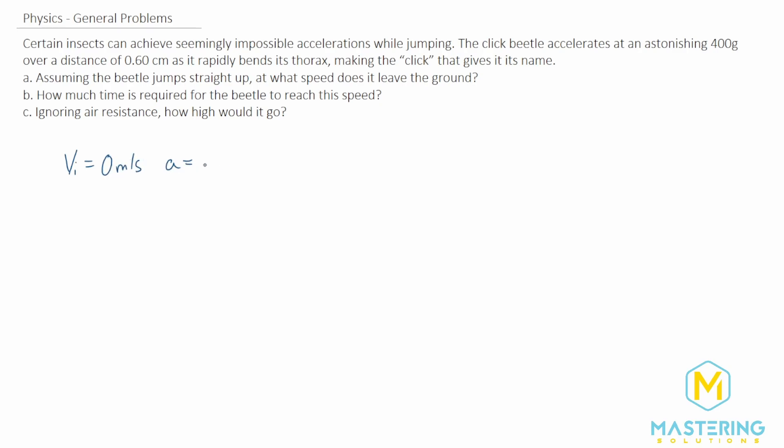The acceleration, they tell us, is 400 gs, so 400 times 9.8. The delta y we're given as 0.6 centimeters, and if we put that into standard units, that is 0.6 times 10 to the negative 2 meters.